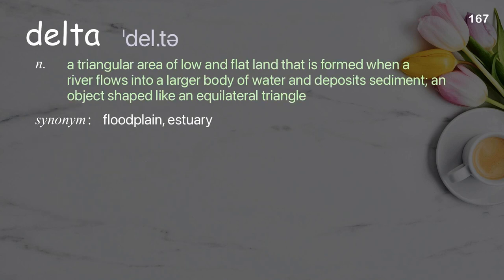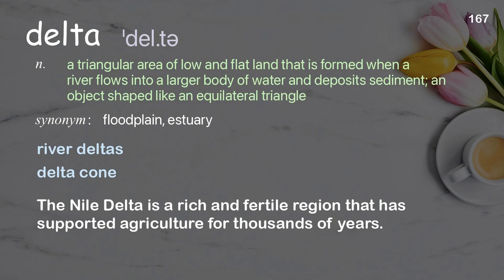Delta: a triangular area of low and flat land that is formed when a river flows into a larger body of water and deposits sediment; an object shaped like an equilateral triangle. Examples: River deltas. Delta cone. The Nile delta is a rich and fertile region that has supported agriculture for thousands of years.